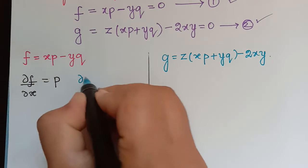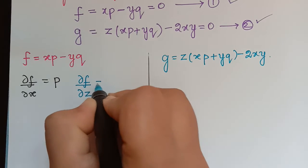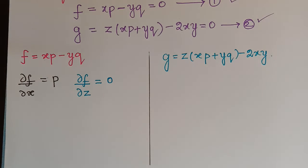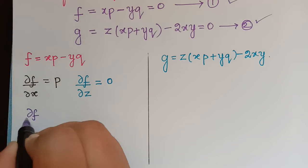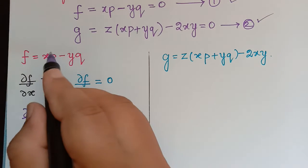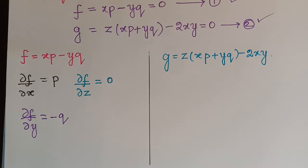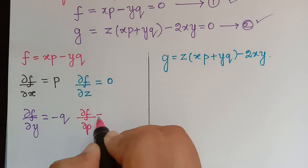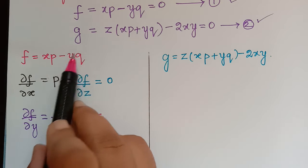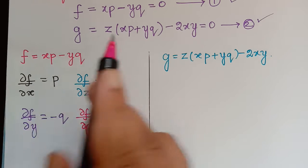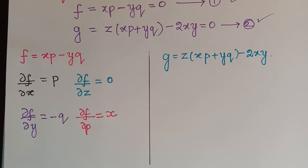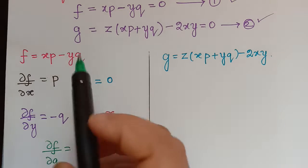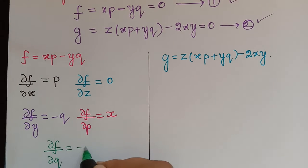Next, ∂f/∂z: since there is no z in f, this equals 0. Then ∂f/∂y: the xp term becomes 0 and we get minus q, so ∂f/∂y = −q. Next, ∂f/∂p: differentiating with respect to p gives x, so ∂f/∂p = x. Finally, ∂f/∂q: that gives −y, so ∂f/∂q = −y.